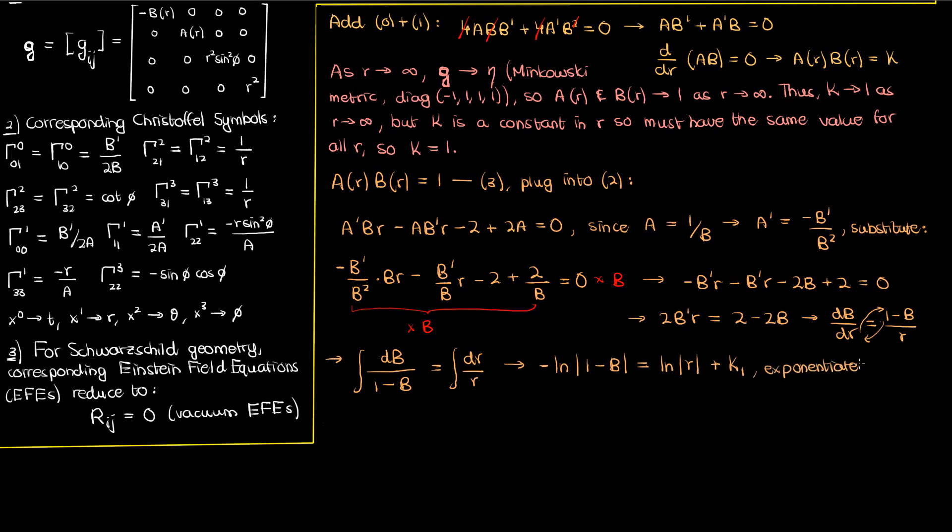We'll then exponentiate both sides to get 1 over (1 minus B) on the left, because when you take the negative inside the natural log you get a power of negative 1 on your 1 minus B. On the right you get the exponential of K1, which is another constant that I'll call K2, times the exponential of ln(R), which is just R. So if we do some algebra and isolate the B, we get 1 minus 1/(K2 times R).